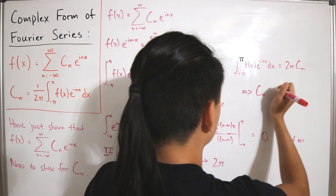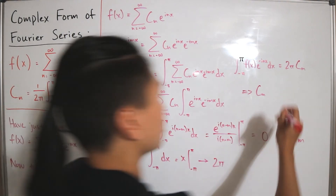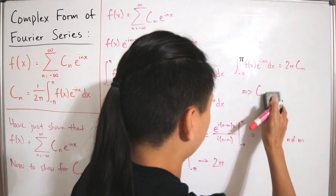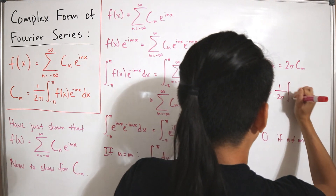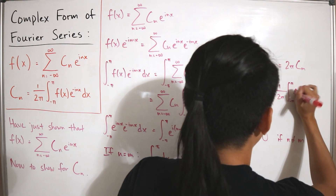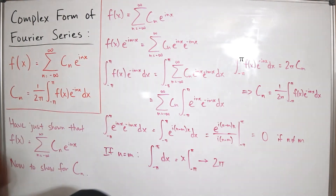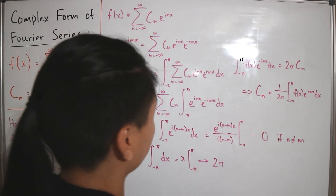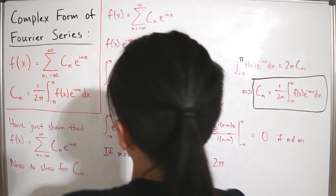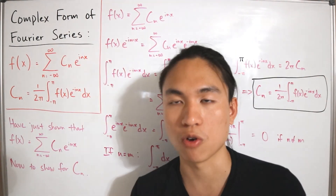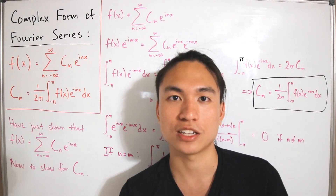Dividing both sides by 2π, and since m equals n we can replace m with n, we arrive at: c sub n equals 1 divided by 2π times the integral from negative π to π of f(x) times e to the negative i times n times x dx. This completes finding the coefficient in closed form in terms of f(x), and therefore completes the entire derivation proving the complex form of the Fourier series. Pretty cool.